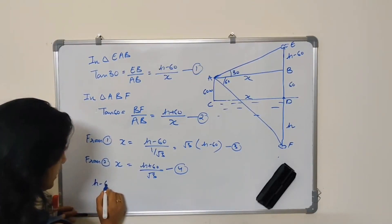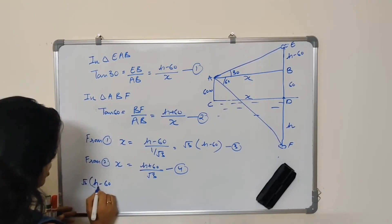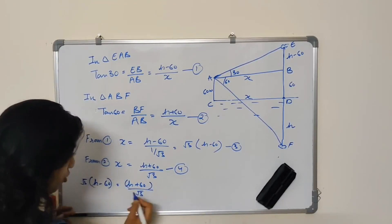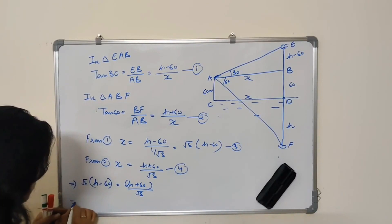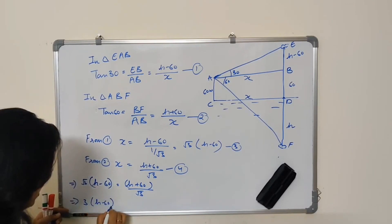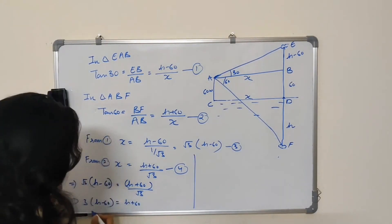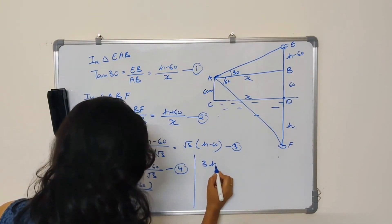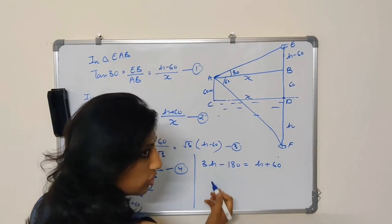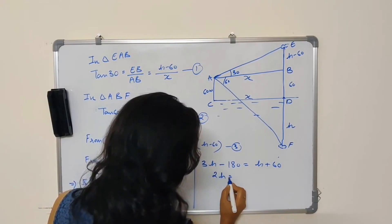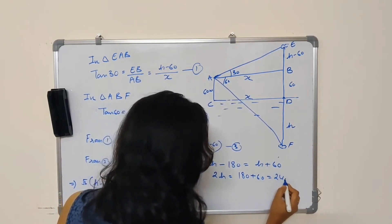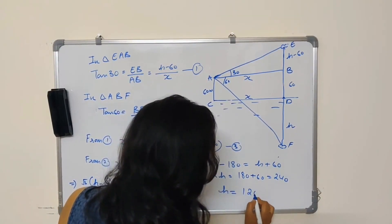H minus 60 into root 3 is equal to H plus 60 divided by root 3. Let me cross multiply. Root 3 into root 3 is 3, so 3 times H minus 60 equals H plus 60. Solving the equation, I get 3H minus 180 equals H plus 60. So 2H equals 180 plus 60, which is nothing but 240. Hence, my H is 120.